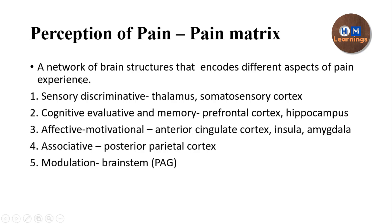The different aspects analyzed include sensory discrimination — such as the location, intensity, and duration of pain — which is handled by the thalamus and the somatosensory cortex. The cognitive evaluation and memory aspect involves remembering pain, consolidating and storing the memory of pain, as well as cognitive functions like attention and decision-making being influenced by pain. This is explained by pain pathways sending collaterals to the prefrontal cortex and hippocampus.